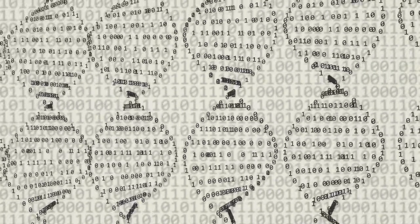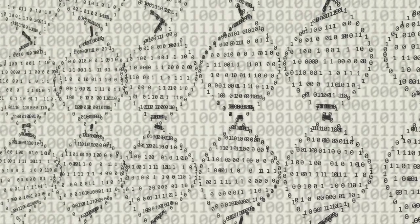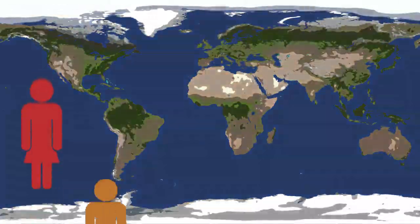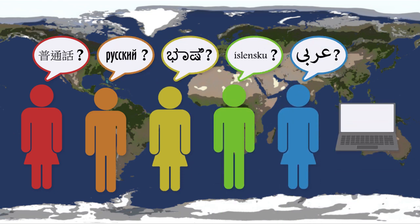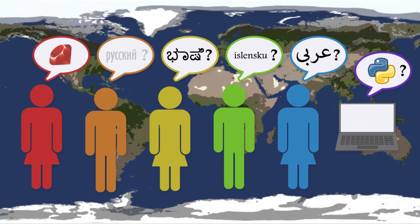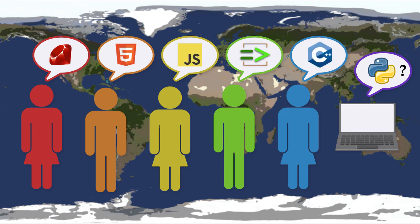Writing out every step in binary code would be tedious and incomprehensible. So just like there are different languages around the world that facilitate communication between people, there are various programming languages that we can use to tell the computer what to do. These languages bridge the gap between how humans think and how computers need to receive instruction. Each language is designed to do different things — you might code in one language if you were designing a video game, and a different language for building a website.